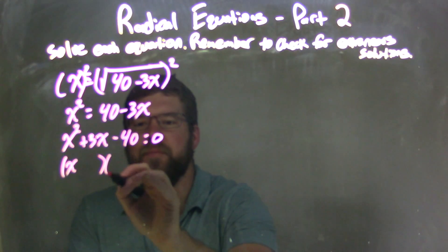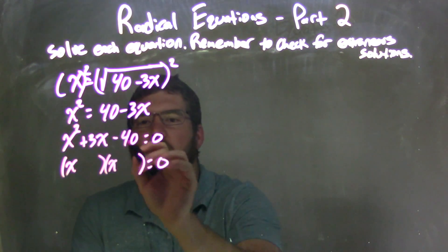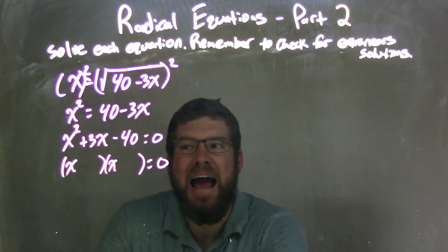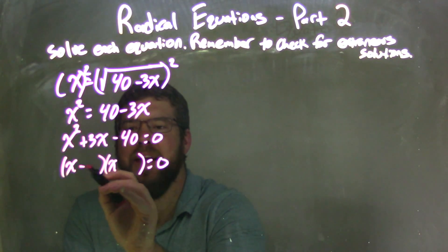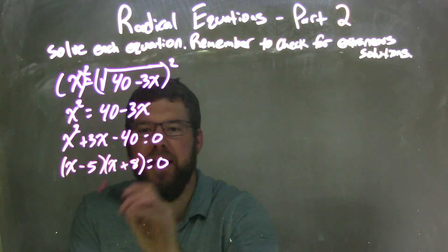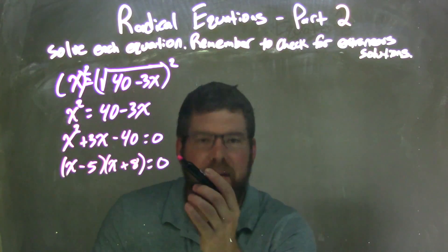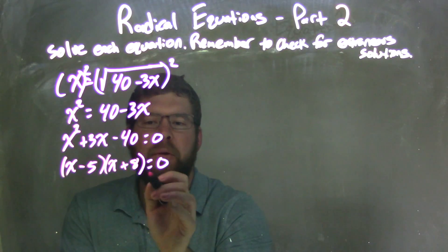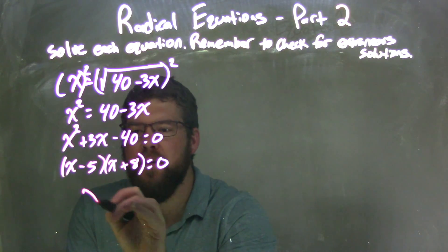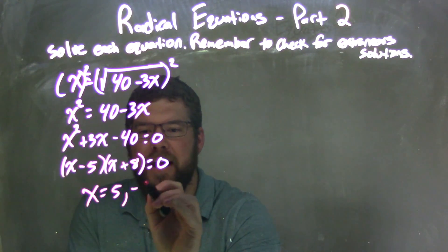We have x here, x there. What numbers multiply to negative 40 but add to be 3? We're looking at negative 5 and positive 8. Negative 5 times positive 8 is negative 40, but when I add those together, I get positive 3. When we set both these parts equal to 0, we're left with x equals 5 and negative 8.